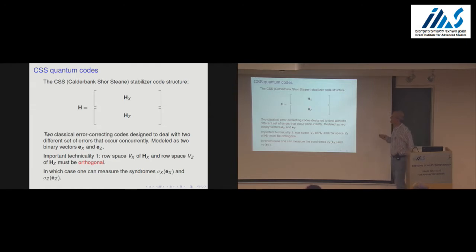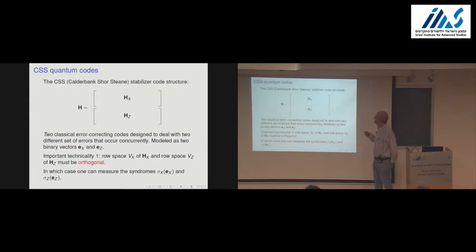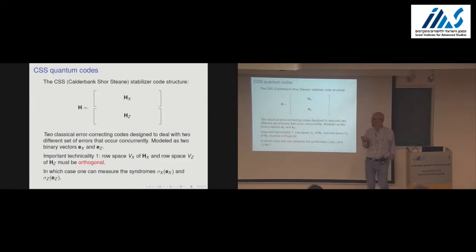You can think of CSS codes as two classical codes. In the quantum world, there are two families of errors we need to correct — for technical reasons called X errors and Z errors. You can think of them simply as ordinary binary errors; they come from different physical errors and we need the two codes to correct both sets. An important technicality is that the two parity check matrices defining your quantum code must have orthogonal rows — the row spaces of H_X and H_Z must be orthogonal.